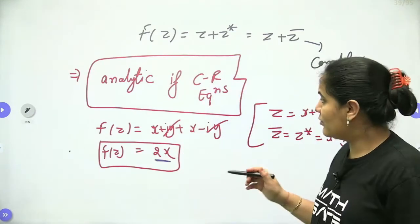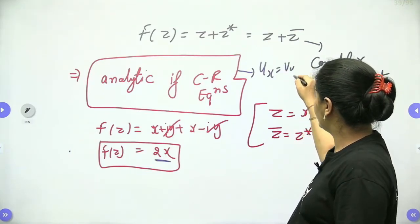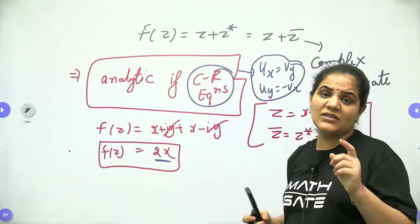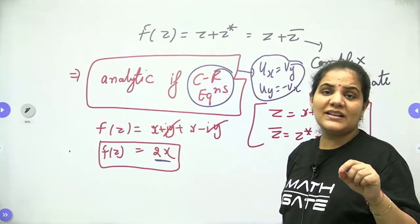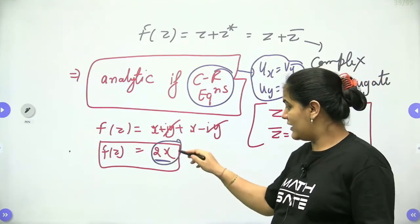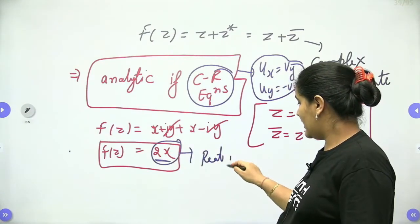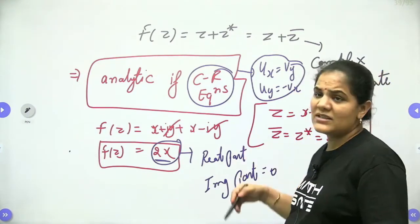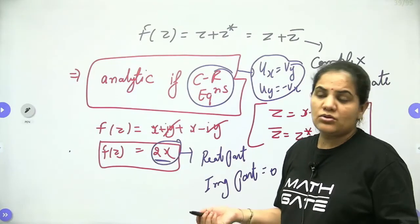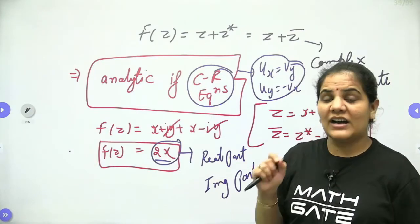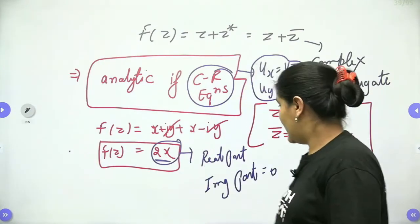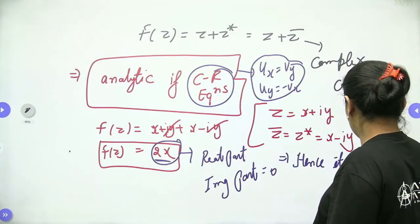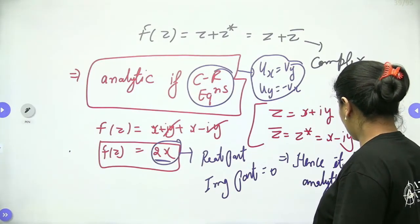For the Cauchy-Riemann equation, both real and imaginary parts must exist. Here only the real part exists and the imaginary part v equals 0. Since the derivatives of v are all zero, the Cauchy-Riemann equation cannot be satisfied. Therefore we can conclude the function is not analytic.